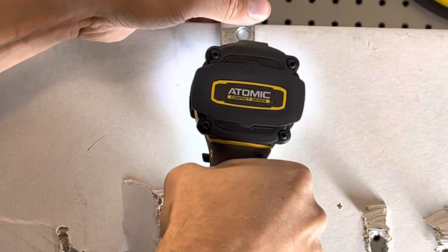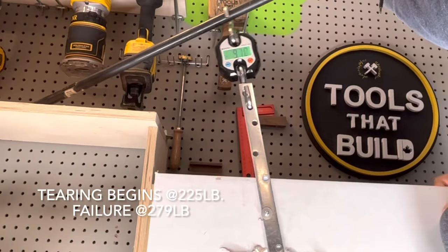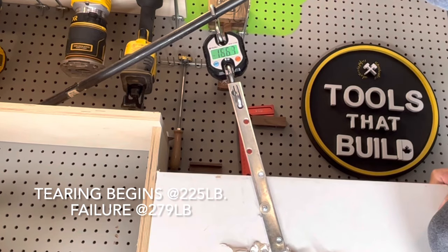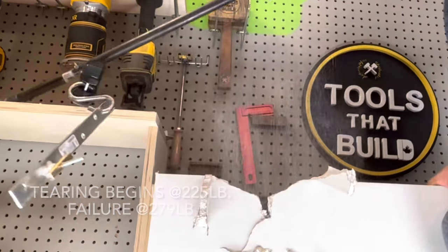This anchor is rated the highest at 265 pounds. It gets pretty close as it begins to tear at 225 pounds with a complete failure at 279 pounds.